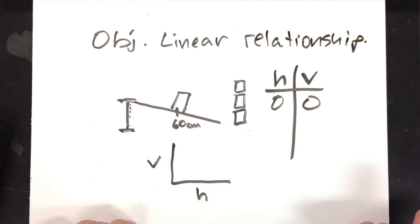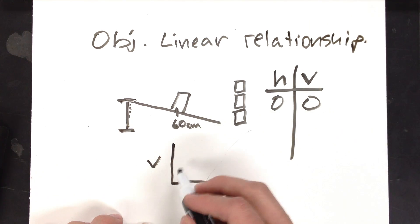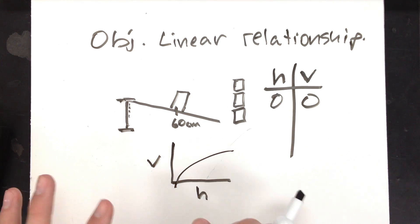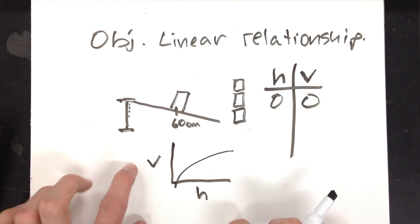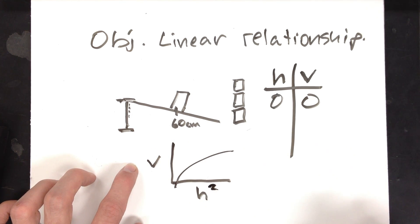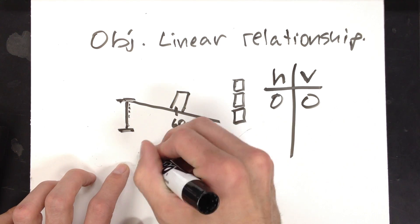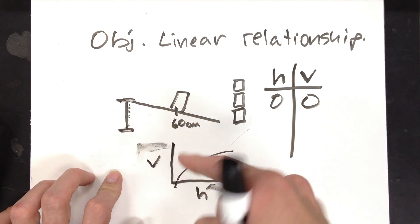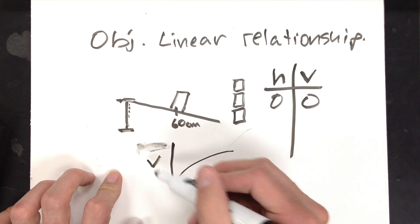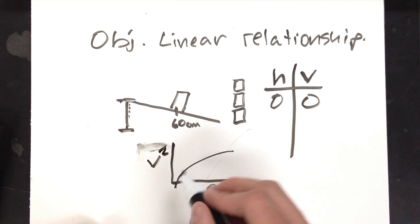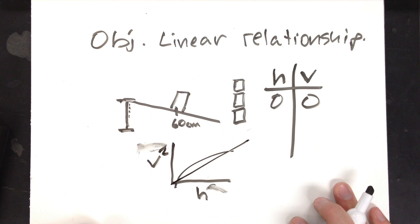Let's say you plot V versus H and you get something like that. Well, then you have to change up what you're plotting. Maybe plot V versus H squared, or maybe plot the square root of V versus H. Change what value you're plotting. Maybe V squared versus H. Change what value you're plotting until you get a straight line.